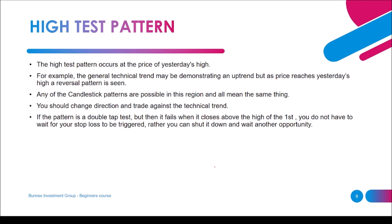Another pattern is the high test pattern, which occurs at the price of yesterday's high. Each and every day sets its high and its low. For example, the general technical trend may be demonstrating an uptrend, but as price reaches yesterday's high, a reversal pattern may be seen. Any of the candlestick patterns are possible in this region and all mean the same thing — you should change direction and trade against the technical trend. If the pattern is a double tap test but then fails when it closes above the high of the first, you do not have to wait for your stop loss to be triggered; rather, you can close the trade and wait for another opportunity.